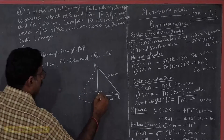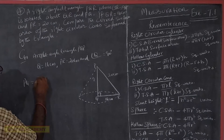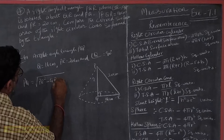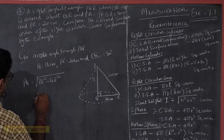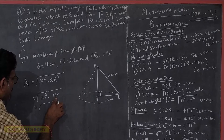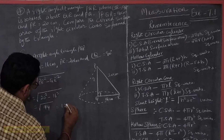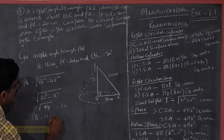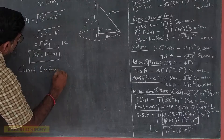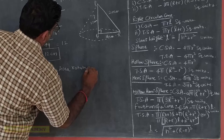This is our right-angled triangle, so we will use the Pythagorean theorem. Then PQ is equal to the square root of PR squared minus QR squared. This gives us the square root of 20 squared minus 16 squared, which equals 12 centimetres. So PQ is equal to 12 cm.